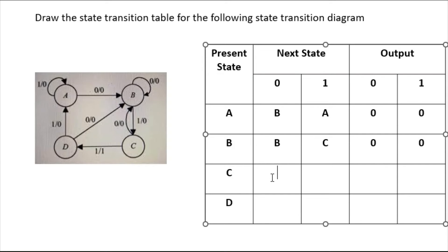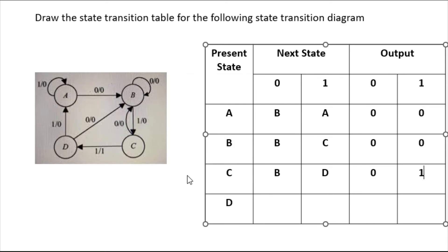When input is 0, 'c' is going back to 'b' and the output is 0. When input is 1, 'c' is going to state 'd' and the output is 1.